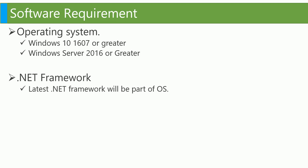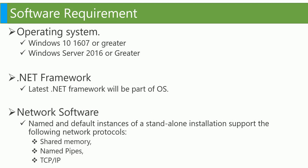For .NET, it will be part of the OS so you don't need to install it separately. Earlier versions of SQL required the latest .NET, but from Windows 1607 or Windows Server 2016 onward, .NET is installed by default. For network software, all network settings will be configured automatically when you install SQL Server, so no need to worry about that.